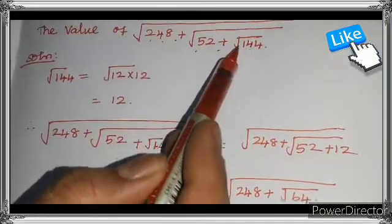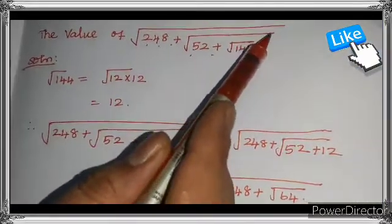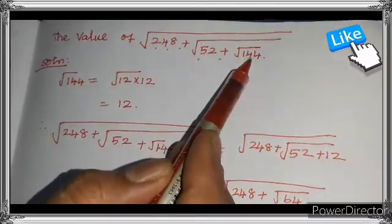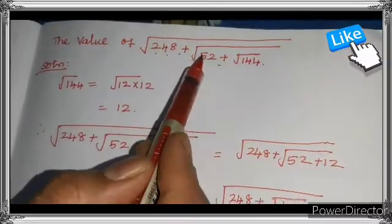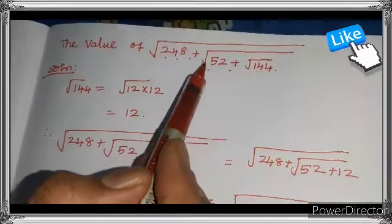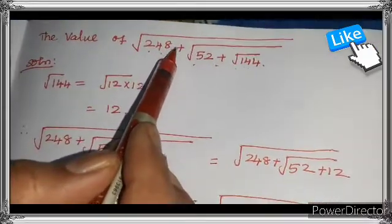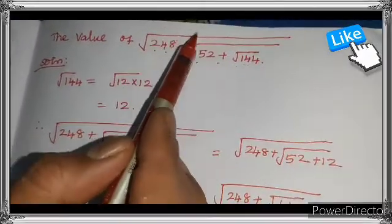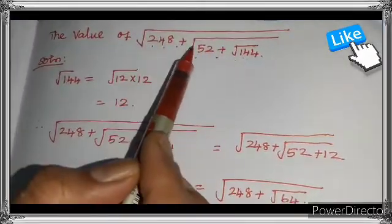Here it is the innermost square root. Here that is the next one. First you have to evaluate 144, then add this number to 52 and find the square root. Then add that result to 248 and find the square root of that.